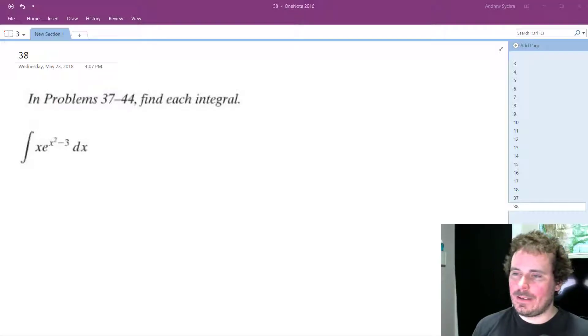All right, so what we have here is the integral of x times e raised to the x squared minus 3 dx. We want to find the integral, so I'm going to use u substitution.